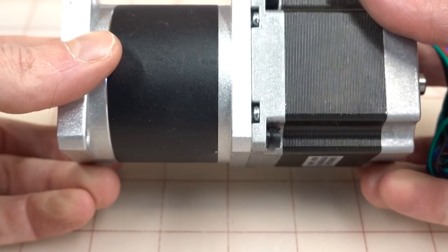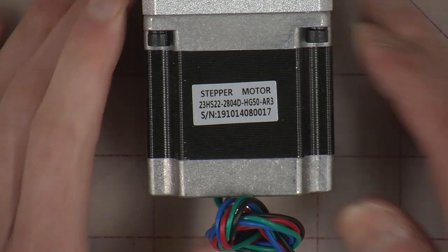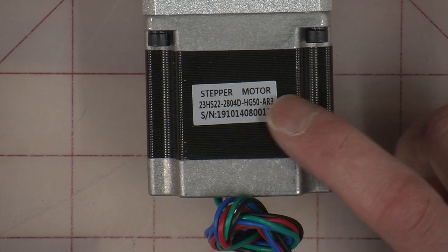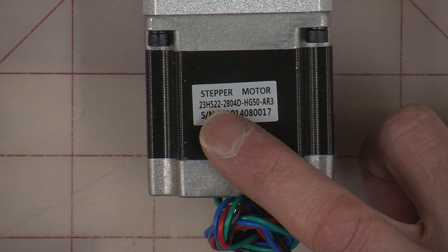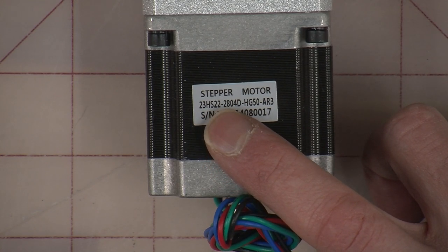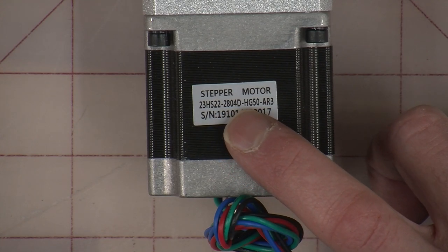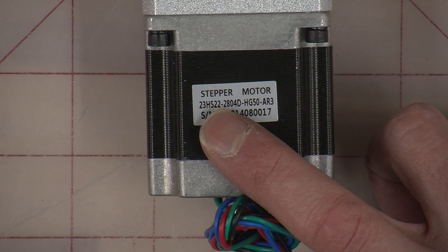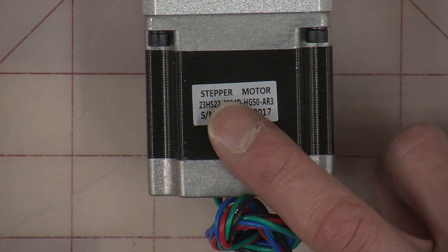This is your J2 motor and the first thing you need to make sure is you got the right motor. There's the label on the end so that you know you have the J2 motor. The part number we want here is 23HS22-2804D-HG50-AR3. That's your part number.